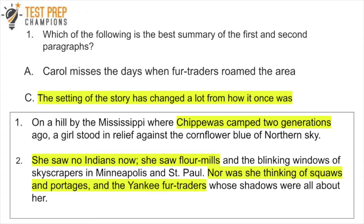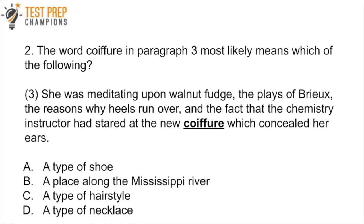Question 2: The word 'coiffure' in paragraph three most likely means which of the following? I have the paragraph here if you'd like to read it. A. A type of shoe. B. A place along the Mississippi River. C. A type of hairstyle. D. A type of necklace. Pause the video, try to figure this out, and then we'll go over it.